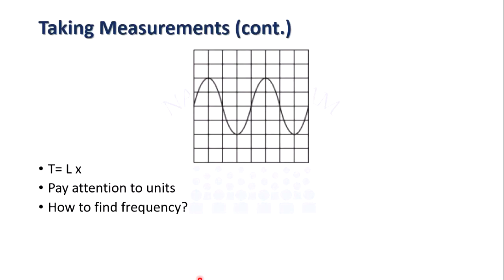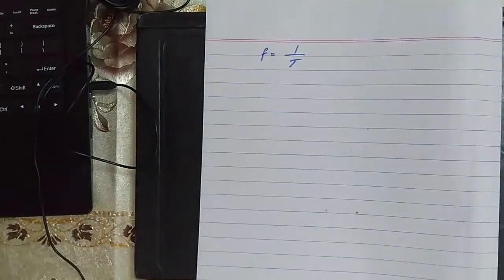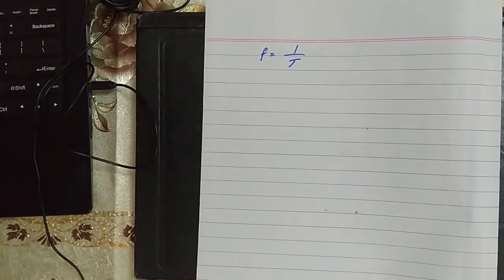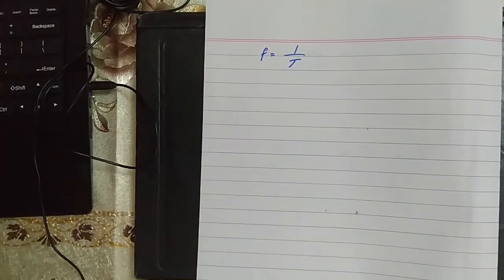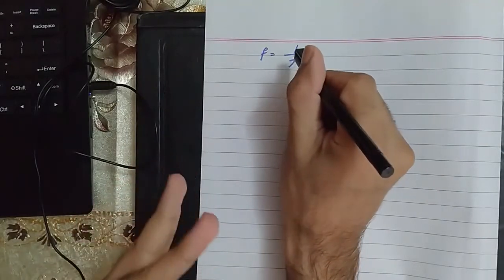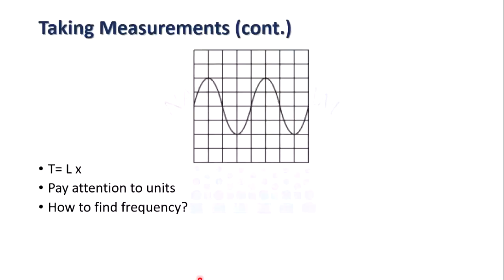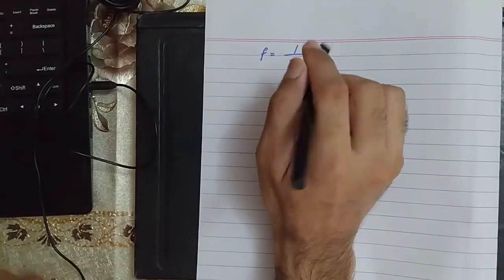The next thing is how to find frequency. If you are asked to find the frequency of the waveform, it is very simple — frequency is the reciprocal of time period. Once you get the time period, take its reciprocal and you get the frequency. Remember: if your time period is in milliseconds, first convert it to seconds and then take the reciprocal to find the frequency in hertz — otherwise you will get the frequency in millihertz.